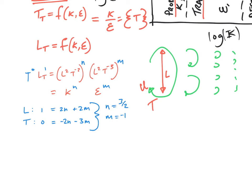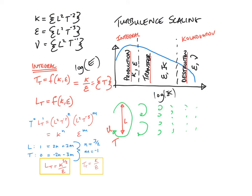And so the length scale, L_t, is k to the 3 over 2 divided by epsilon. And so for the integral scale, we have the length scale k to the 3 halves over epsilon, and the time scale k over epsilon.